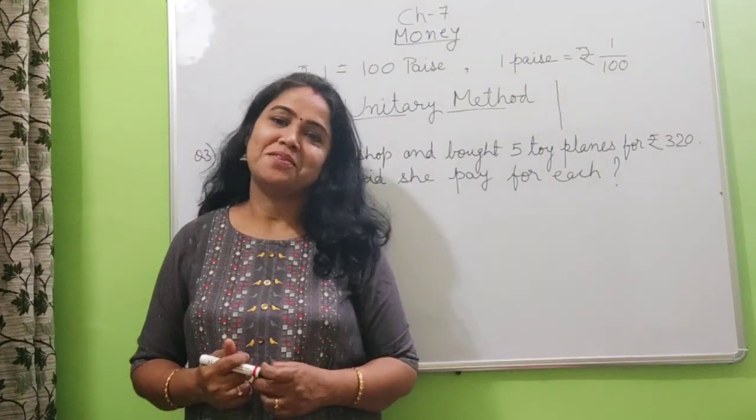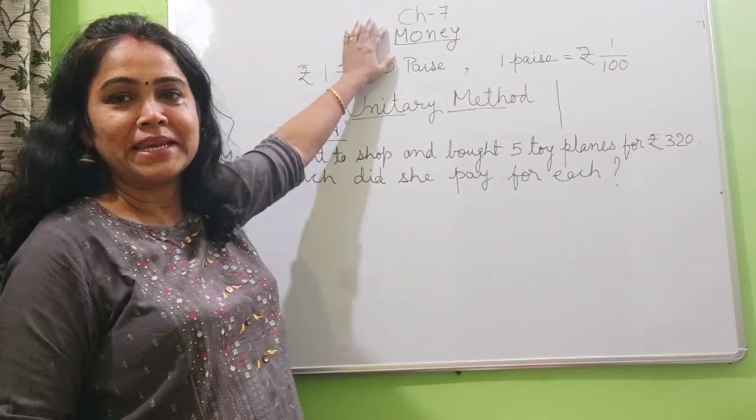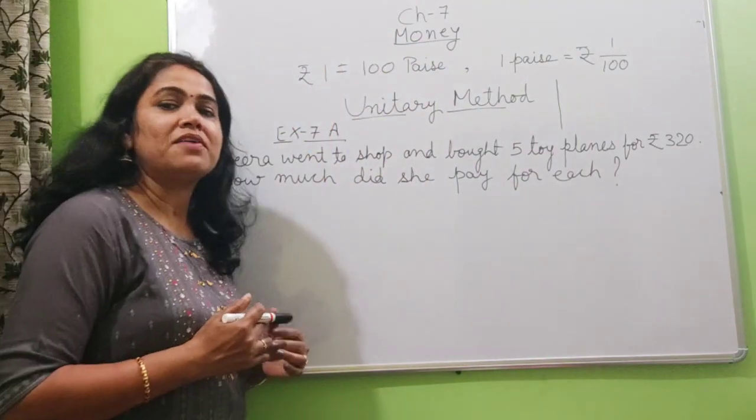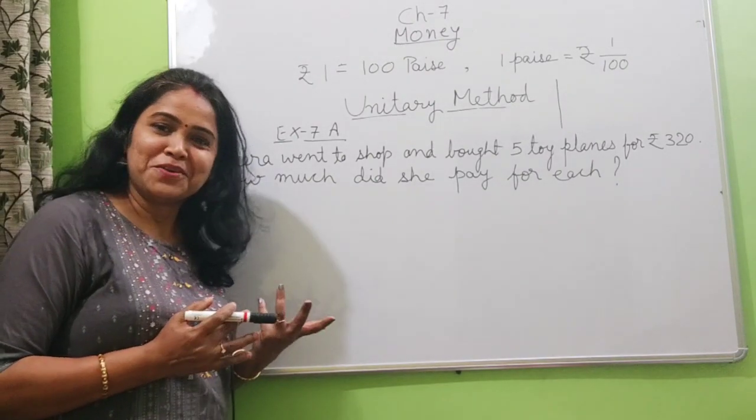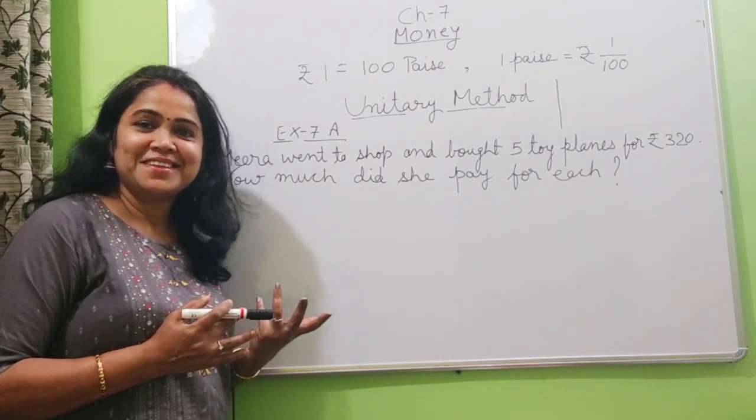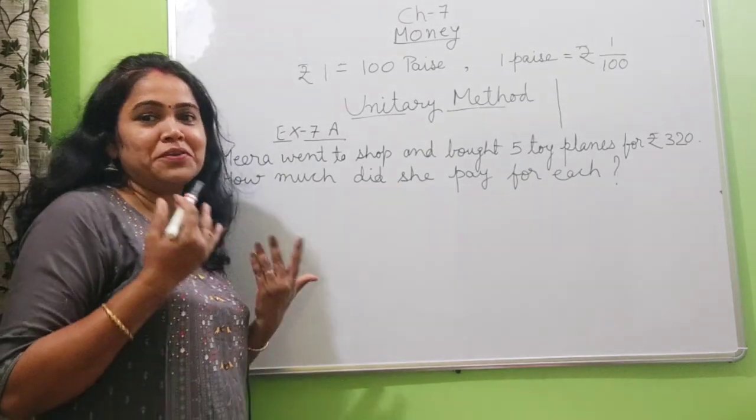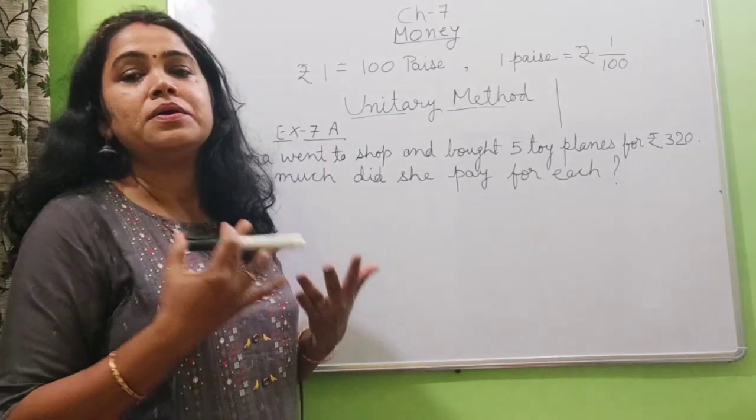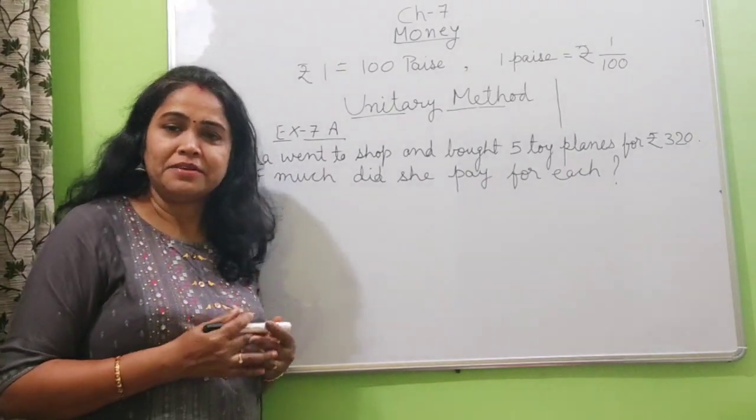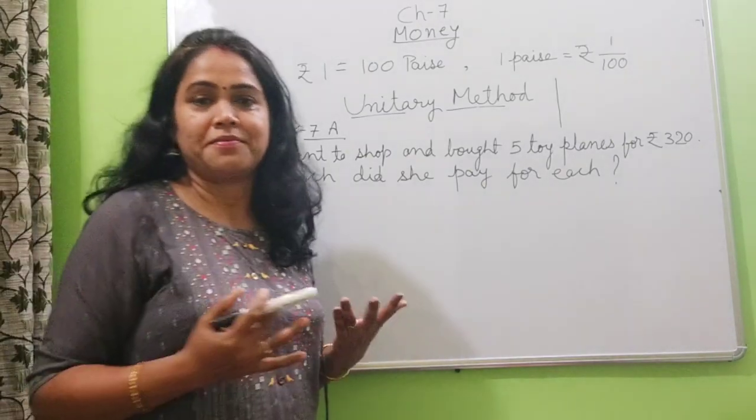Hello children, today I will start chapter 7. The name of the chapter is money. In this I will deal with the use of money. Everybody knows what is the use of money? Purchasing things, everything - whatever you are eating, whatever you are wearing, whatever you are studying, the pen, pencil, everything you are buying using money. It is very important and without money we cannot imagine our life.